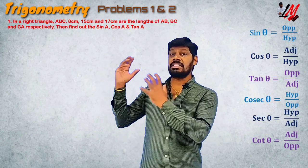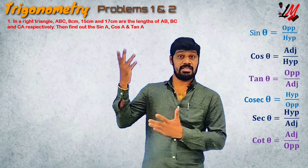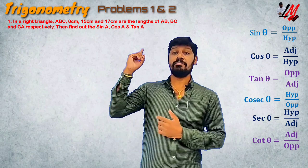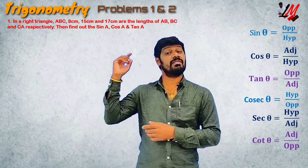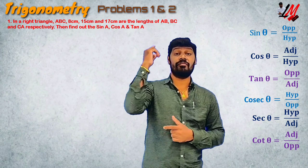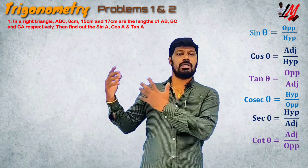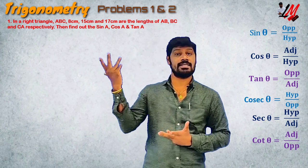In one right triangle ABC, the sides AB, BC, CA are respectively 8, 15, 17. What are the values of sine A and cosine A?